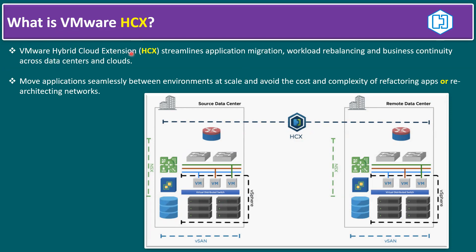VMware HCX streamlines application migration, workload rebalancing, and business continuity across data centers and clouds. It moves applications seamlessly and continuously between environments at scale, and avoids the cost and complexity of refactoring applications or re-architecting networks. For example, if a customer is using NSX-V and wants to migrate to NSX-T or the latest version now renamed as NSX, this solution is also applicable.